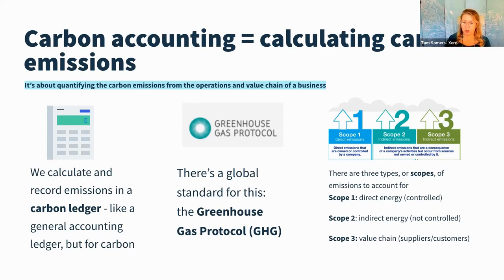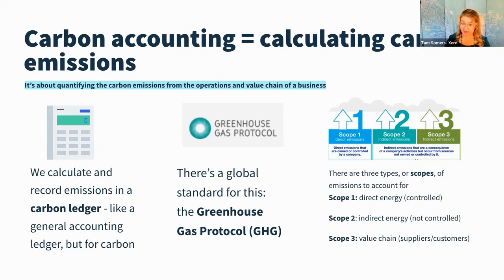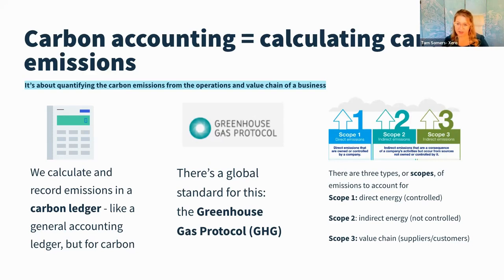Scope two is indirect energy that you use but don't necessarily directly control — so that might be, for example, the base building electricity and gas in the office where you are. Scope three is your value chain: suppliers, and in some cases, customers and how they use your product. How do we quantify that?